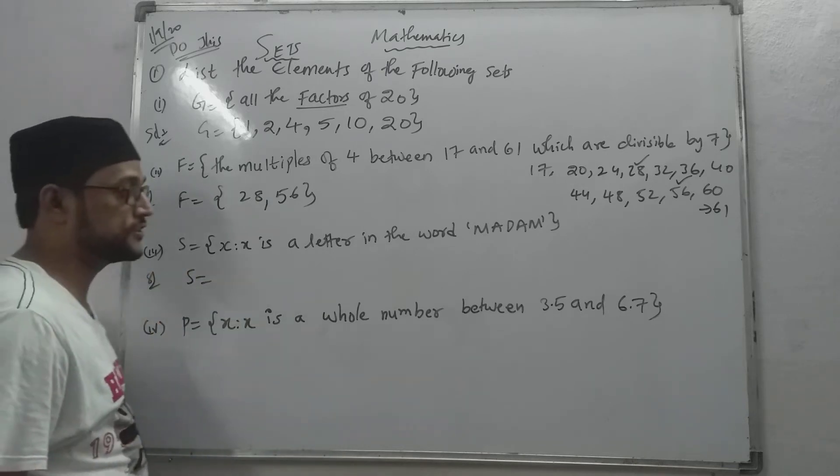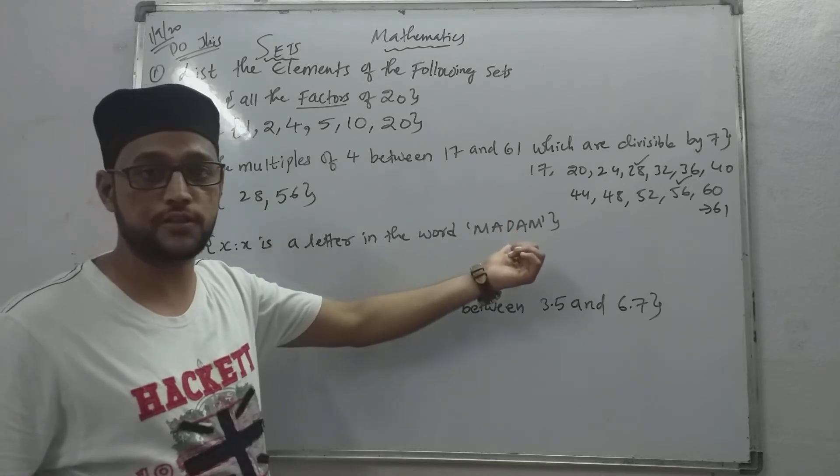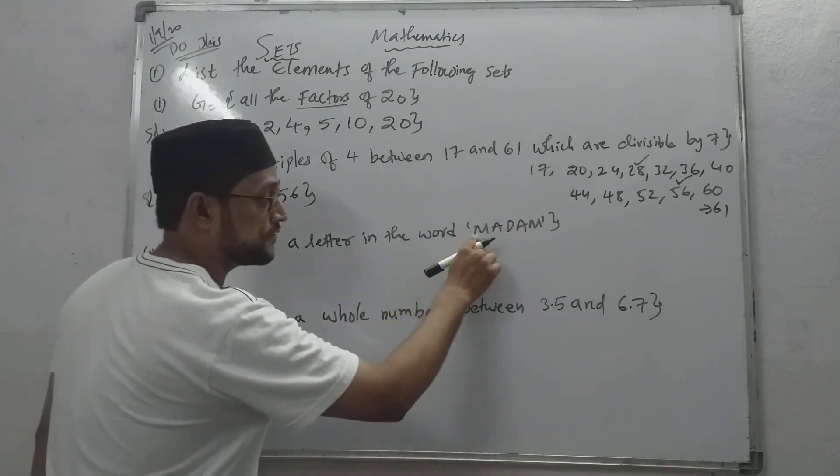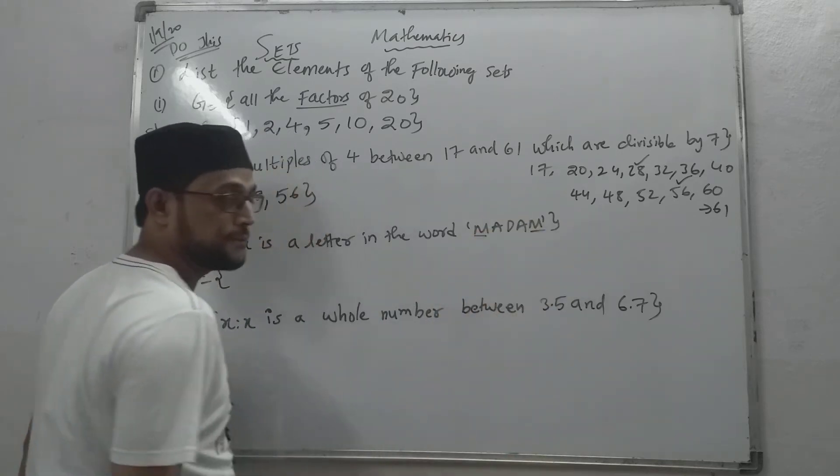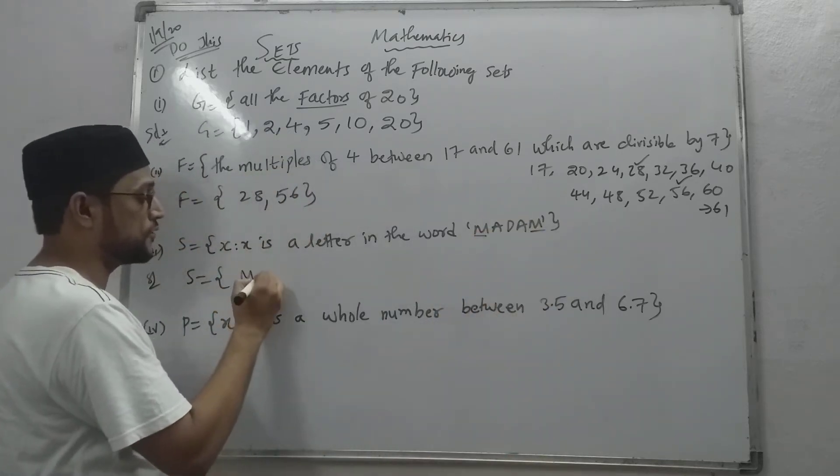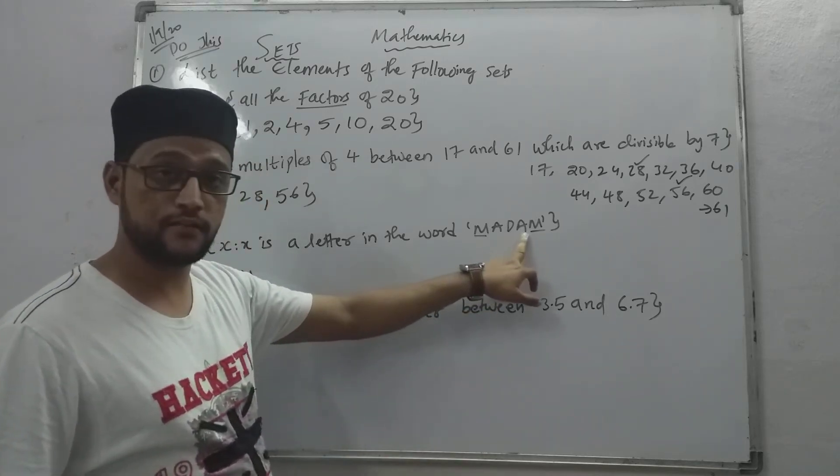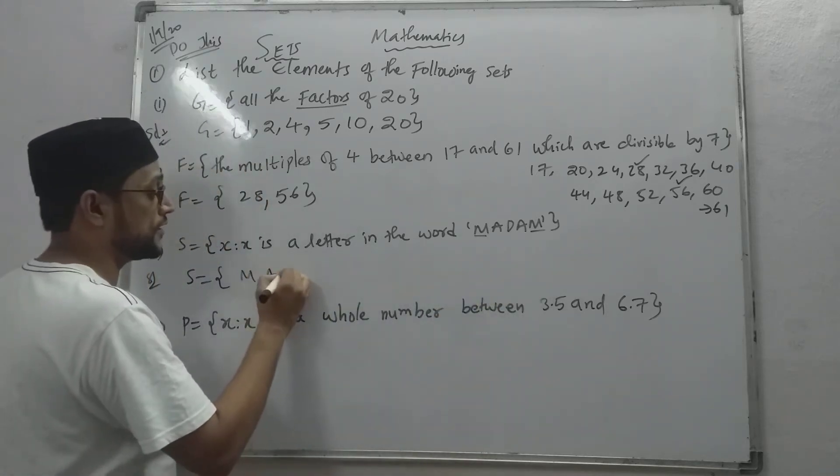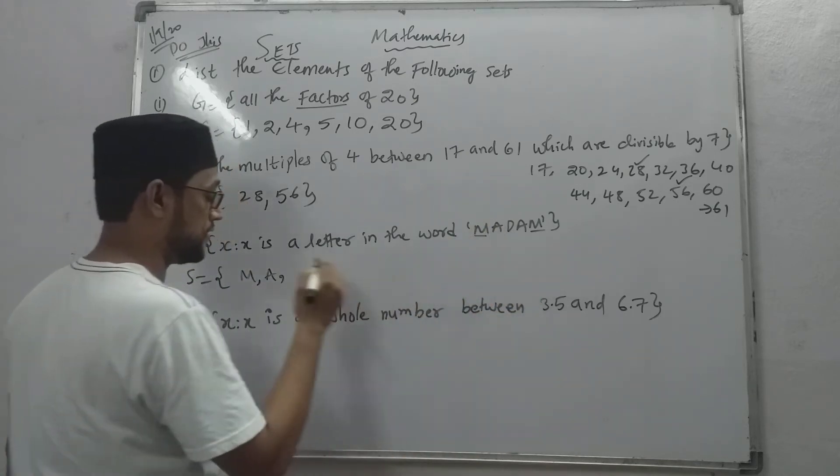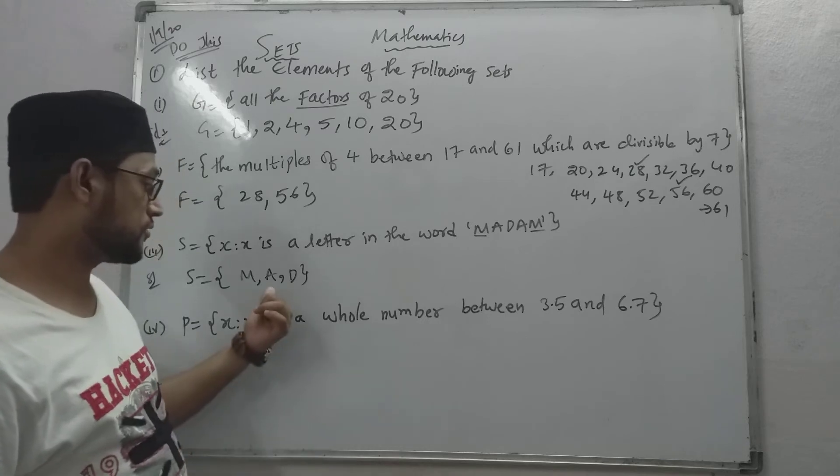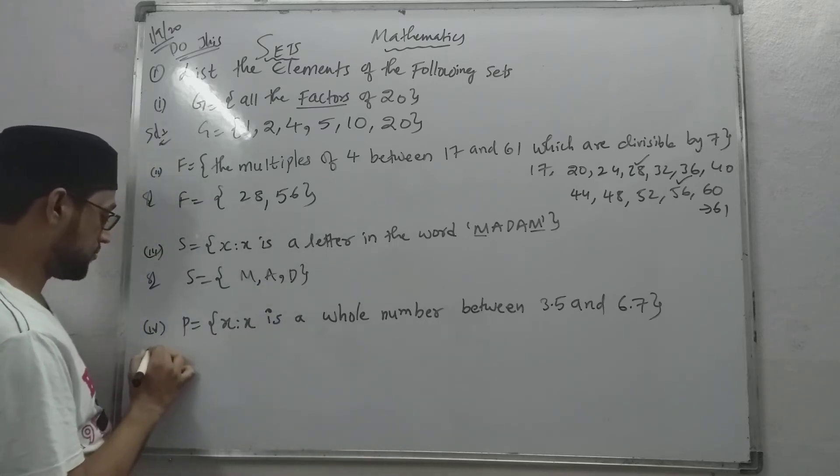Set S. This is very easy. All of you know about this. How we have to solve this? See here - there is M and it is repeating twice. That means we have to write only one time. Next, there is only one A, one D, and so on. Now we got the answer. Very easy.